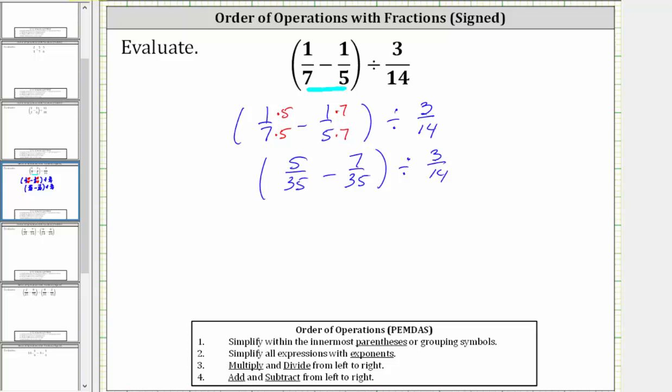And now subtracting, the denominator remains 35 and the numerator is 5 minus 7, which equals negative 2.